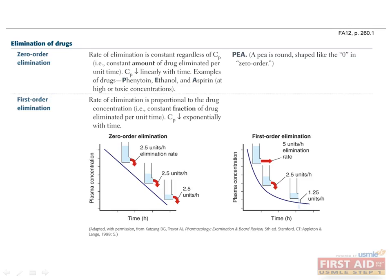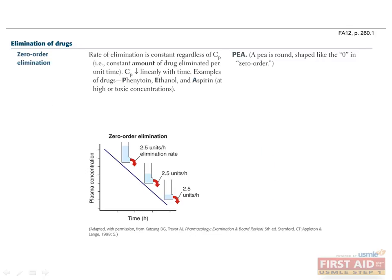Let's talk about the elimination of drugs. In zero-order elimination, the rate of elimination is constant regardless of the concentration of drug in the body. A constant amount of drug is eliminated per unit time, resulting in a linear decrease in plasma concentration. Zero-order elimination is less common than first-order elimination. Examples of drugs that undergo zero-order elimination include phenytoin, aspirin, and ethanol. This can be remembered with the mnemonic PEA, which is round like the number zero.